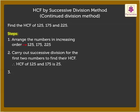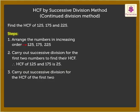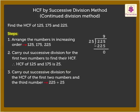Step 3: Now, carry out successive division for the H.C.F. of the first two numbers and the third number. That is, 225 divided by 25. On dividing 225 by 25, we get the last divisor as 25. Hence, H.C.F. of 125, 175, and 225 is 25.